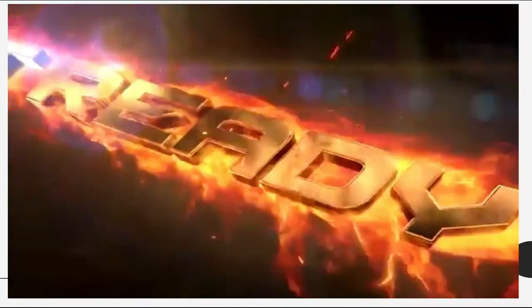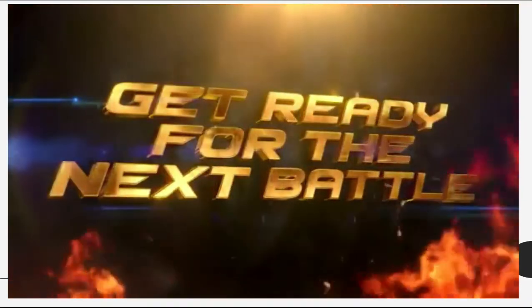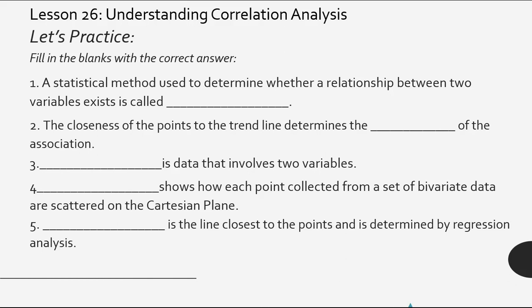Now, let's practice. Get ready for the next battle. Fill in the blanks with the correct answer. First, a statistical method used to determine whether a relationship between two variables exist is called? Very good. That is correlation analysis. Next, the closeness of the points to the trend line determines the blank of the association. That is what? Determines the strength of the association.